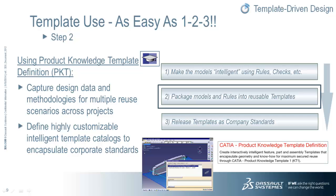Now it's time to create the templates through the use of CATIA Product Knowledge Template Definition, or PKT. This will be done by your most senior users. We'll use PKT to capture design data and methodologies for multiple reuse scenarios across projects. In addition, we'll define highly customizable, intelligent template catalogs to encapsulate your company's corporate standards. This is step 2, and now we're ready to leverage these rules, templates, and catalogs across the design and engineering community to incorporate a template-driven design methodology.